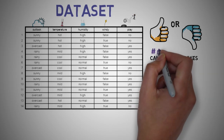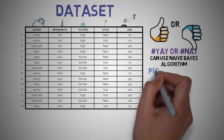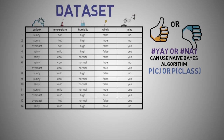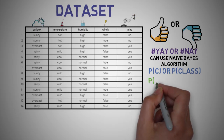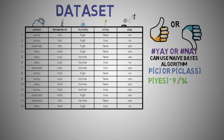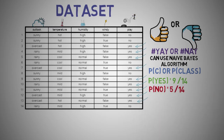First, we determine how many yeses and how many noes we get from our dataset. So the probability P(C), or probability of our classes — which are yes and no — we can calculate this as follows. The probability of yes is 9 out of 14. We can count all the way to 9 total yeses from the 14 possible days. And similarly, we can count 5 noes, which gives us a probability of 5 out of 14.